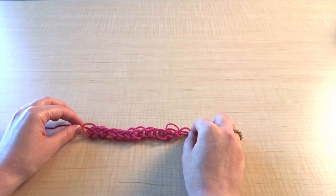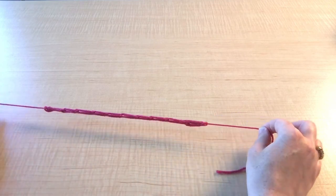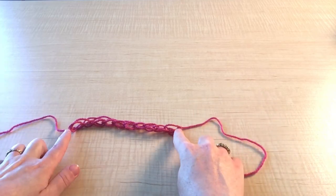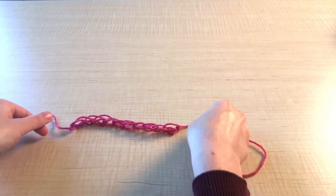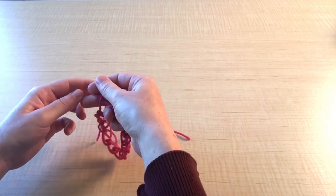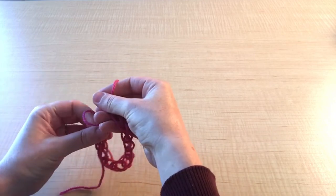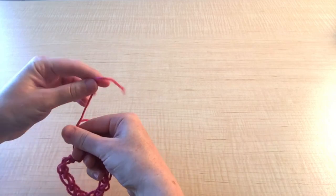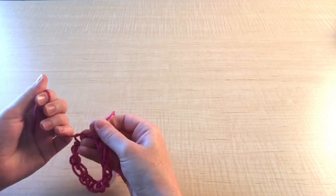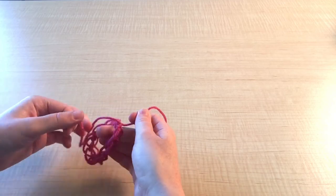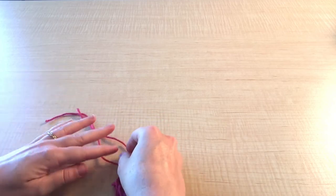Now we'll pull each end of the yarn nice and tight so that it makes knots at the end. Now we can tie our strings together so that we form our bracelet. And then we'll trim the ends.